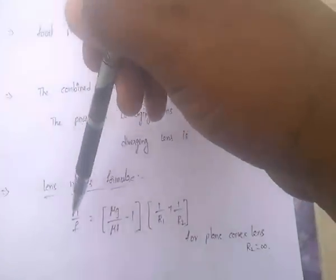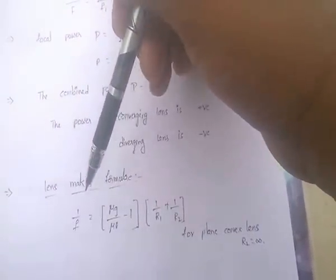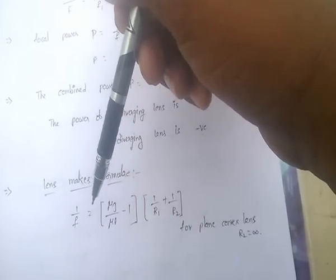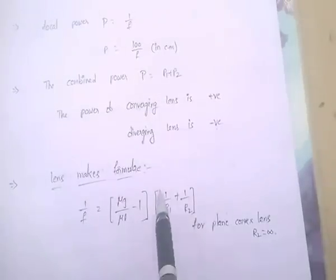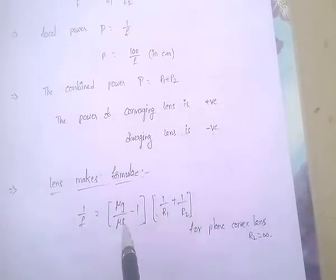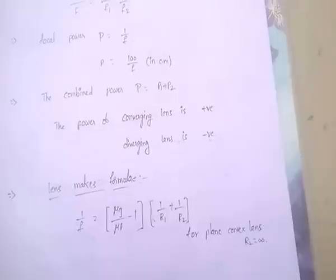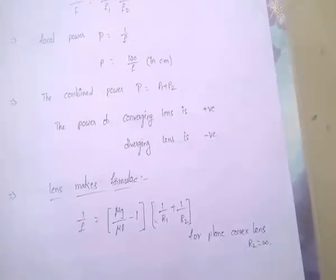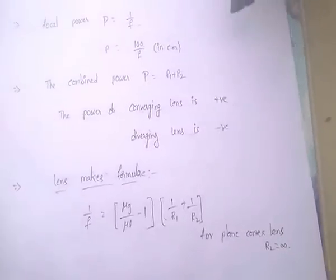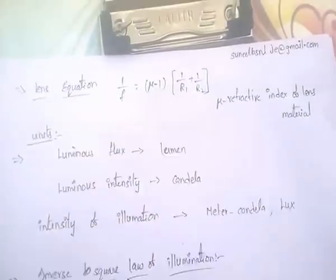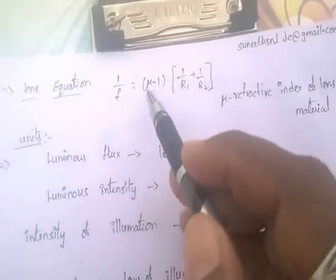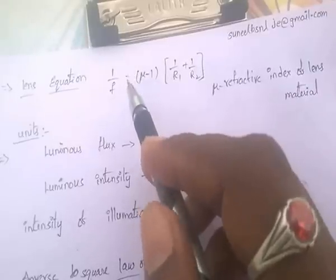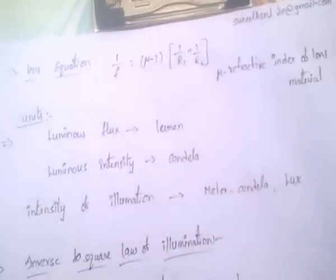The lens maker's formula — very, very important — is 1 by F equal to mu minus 1 into 1 by R1 plus 1 by R2. Here mu means mu G by mu L. So 1 by F equal to (mu G by mu L minus 1) into (1 by R1 plus 1 by R2). In the lens equation, mu is the refractive index of the lens material.